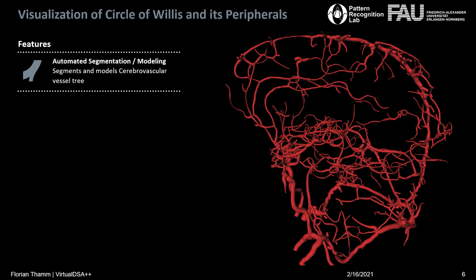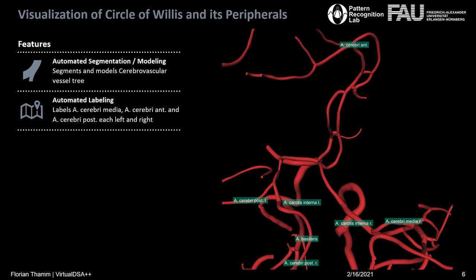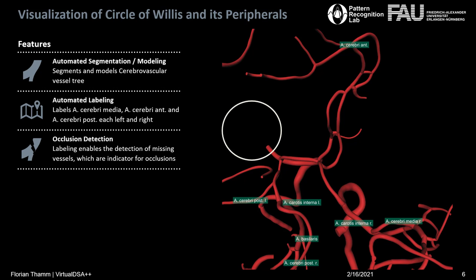First, it leads to a segmentation and modeling of the cerebrovascular system, and that fully automated. It can also label the cerebral arteries — cerebri anterior, media, and posterior — left and right. We use the labeling to automatically detect occlusions in these vessels, but more on that later.